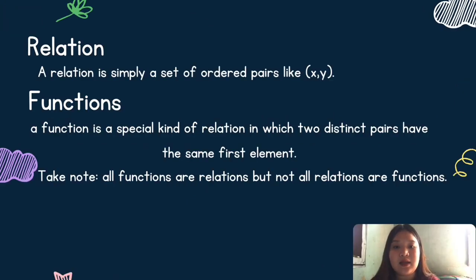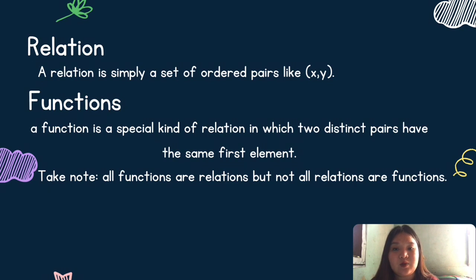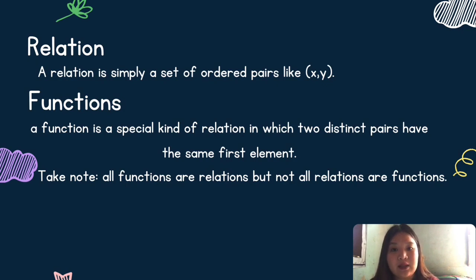In math, we often hear the terms function and relation. Most of the time, confusing yung meaning nitong dalawa kaya napagpapalit siya. Let us start the discussion by defining and comparing the two terms. A relation is simply a set of ordered pairs like (x, y). On the other hand, a function is a special kind of relation in which two distinct pairs have the same first element. Take note: all functions are relations but not all relations are functions.